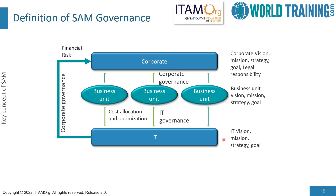At the IT level, we have the IT vision, mission strategy and the goals. IT has its IT governance and corporate has its corporate governance. So there is, as they say, the cascading of governance from the topmost layer to the bottommost layer of any organization.